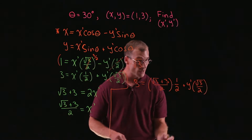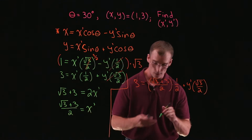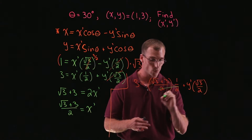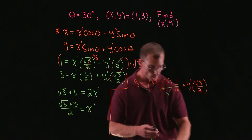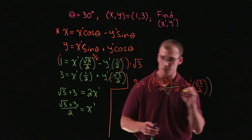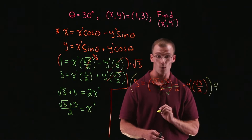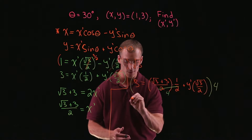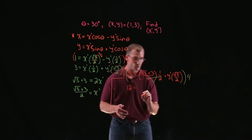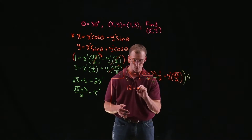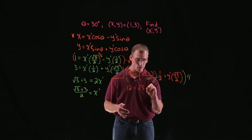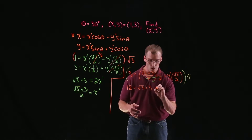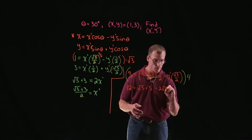Now I'm going to do a little algebra and solve for y prime. If we multiply root 3 plus 3 over 2 times 1 half, our denominator is going to be 4. We can clear the denominators by multiplying this entire equation through by 4. That gives us 12 on the left. On the right, the 4s cancel with the first term, leaving root 3 plus 3, and 4 times root 3 over 2 leaves us with 2 root 3 y prime.